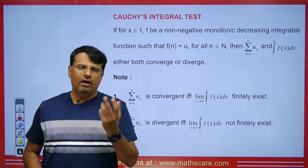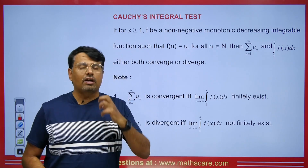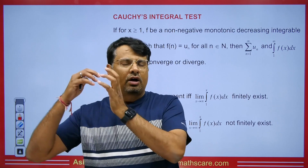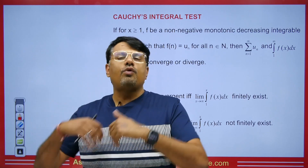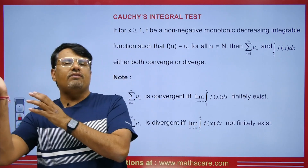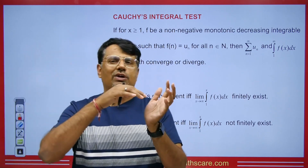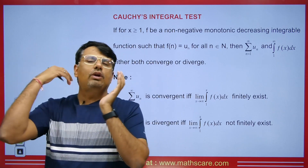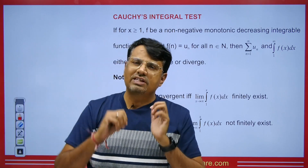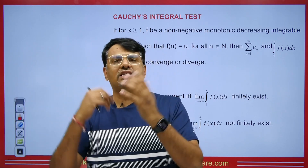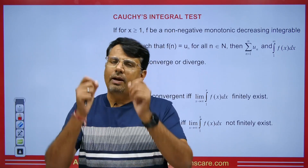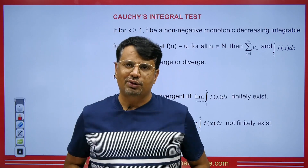It is very important. Sometimes, the proof of the P-Series test is asked in the exam — that for P greater than 1 it is convergent, and if the value of P is less than or equal to 1 it is divergent — and that proof comes from this test.